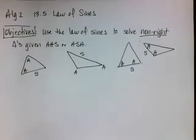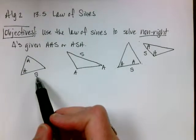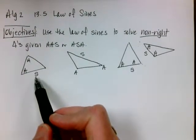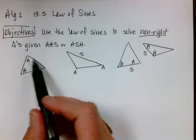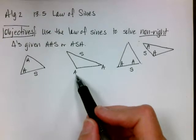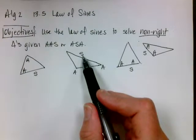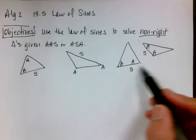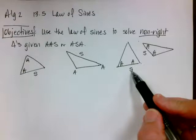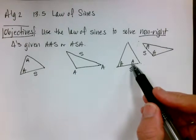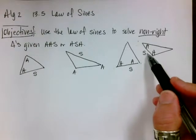I drew some examples of angle-angle-side and angle-side-angle. Angle-angle-side means that the side is not included in between the two angles. It doesn't have to be an acute triangle — it could be an obtuse triangle. The side just has to be not included. For angle-side-angle, the side is included in between the two angles.